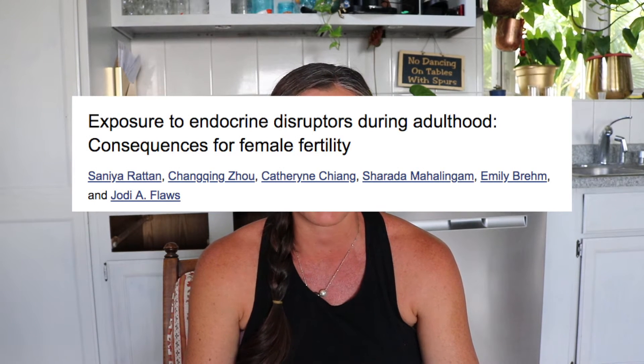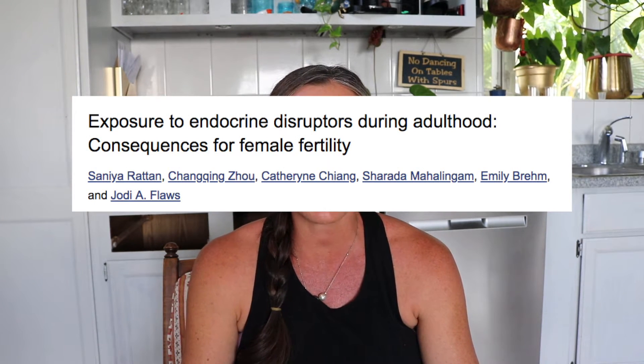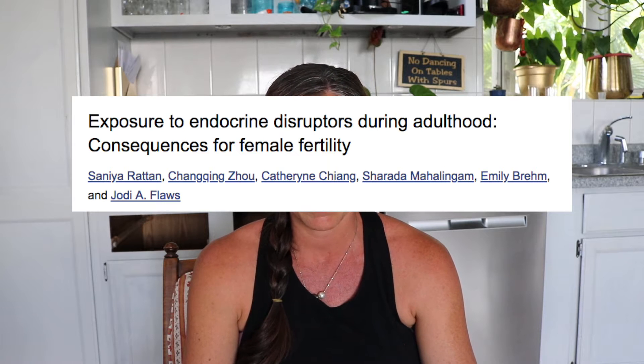Let's start this video with a look at an article from the Journal of Endocrinology: 'Exposure to endocrine disruptors during adulthood: consequences for female fertility.' From this article, we can define endocrine disrupting chemicals as chemicals that exhibit endocrine disrupting functions in both humans and animals. This article gives us a great framework for the diverse exposure we receive from endocrine disrupting chemicals.